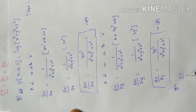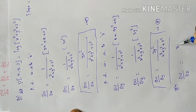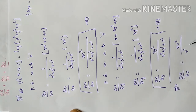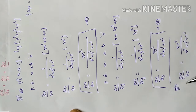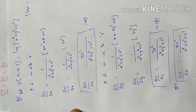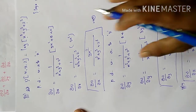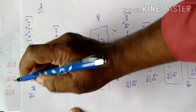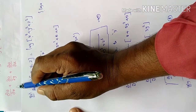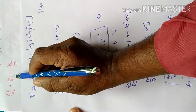Similarly, ∂u/∂z equals 3z squared divided by (x cubed plus y cubed plus z cubed). That is equation number 3.